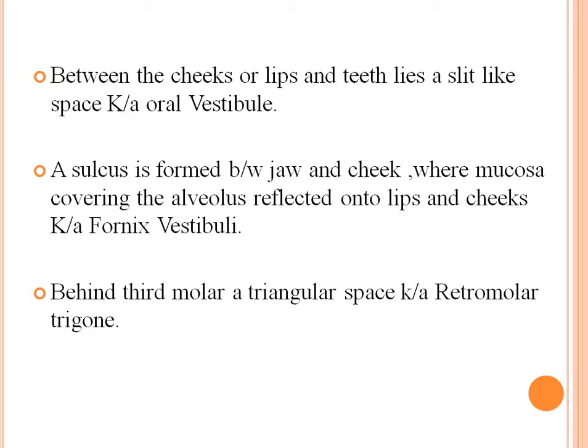Between the cheeks or lips and the teeth lies a slit-like space known as the vestibule. A sulcus is formed between the jaw and cheek where the mucosa covering the alveolus reflects onto the lips and cheek, known as the fornix of the vestibule. Behind the third molar, a triangular space known as the retromolar trigone is present.